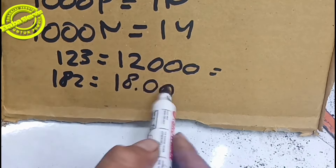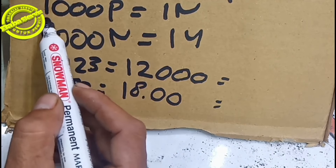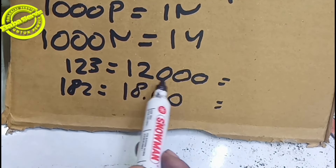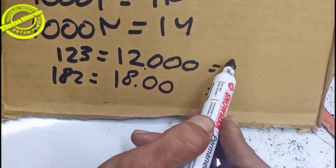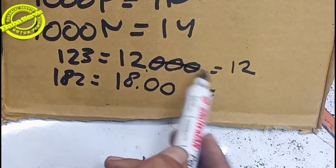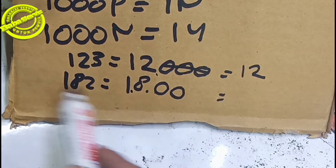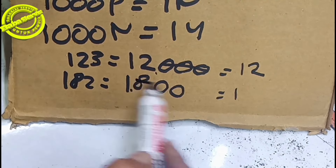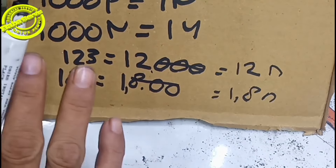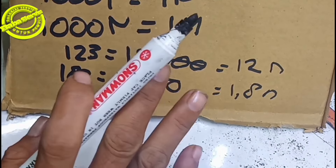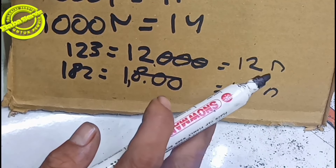Satuannya adalah Pico. Jika kita jabarkan ke Nano — karena seribu Pico sama dengan satu Nano — maka 12.000 Pico adalah 12 Nano. Sedangkan 1.800 Pico, tinggal kita cari setaretnya, menjadi 1,8 Nano. Apabila sudah mencapai angka seribu Nano maka harus disebut satu Mikro.